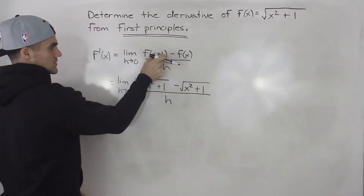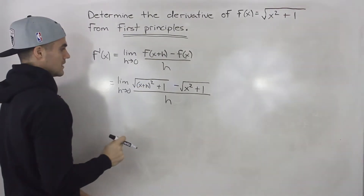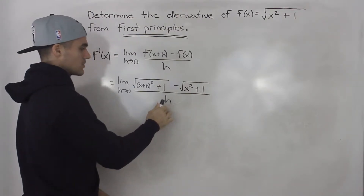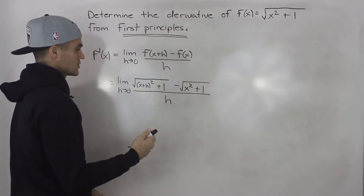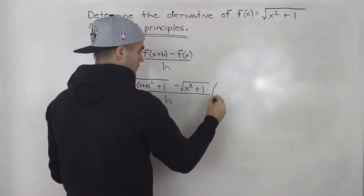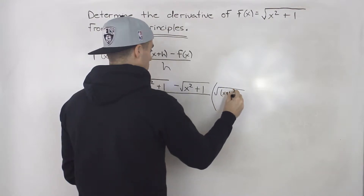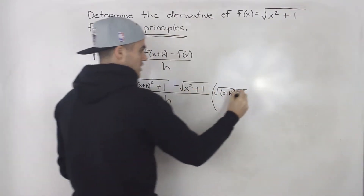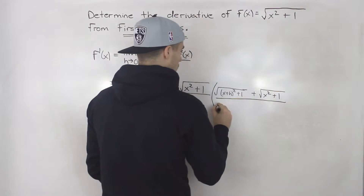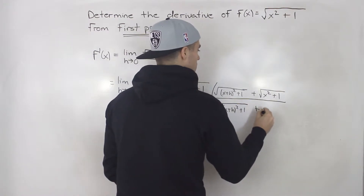Notice this f of x plus h — we took x plus h and plugged it in for x, and you have to make sure that that is in brackets. Now what we're trying to do is get rid of this h in the denominator so we can plug in a value of zero for h. The way we do that in this case is we're going to have to rationalize this numerator, so we multiply by its conjugate: the square root of x plus h squared plus one, plus the square root of x squared plus one — all over the same thing, so we're multiplying the entire expression by one.